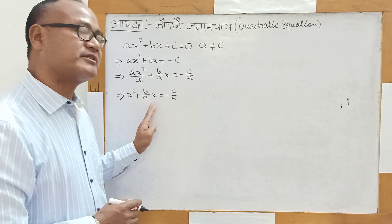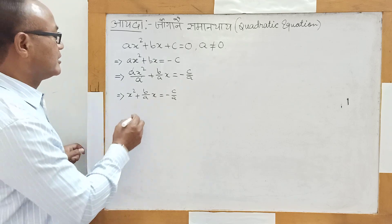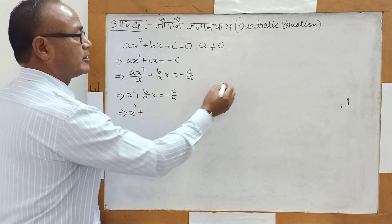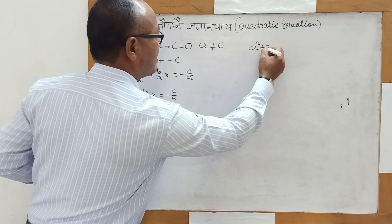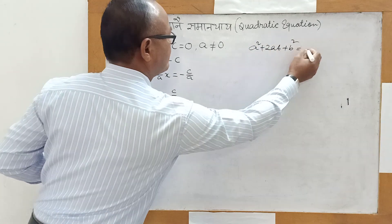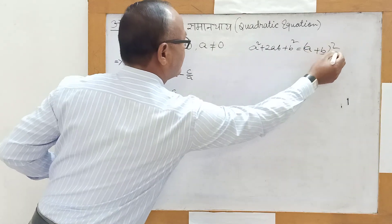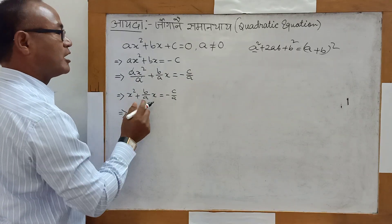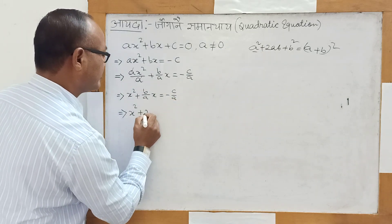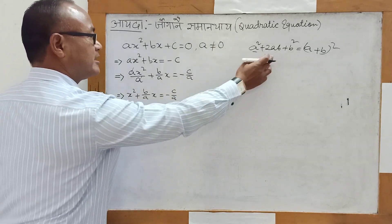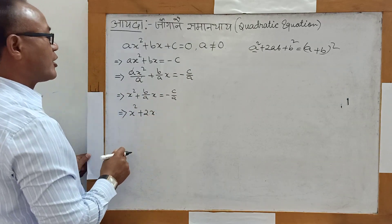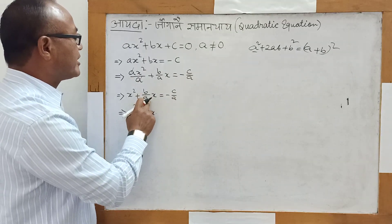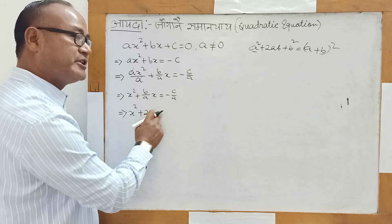Here we can write this down. We have A squared plus 2AB plus B squared, because if we have two figures — one is x, and the other is B by A — then B by A into x gives us the cross term.